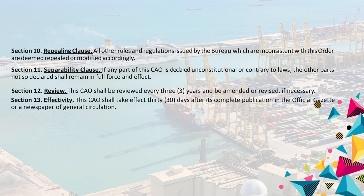Section 10. Repealing Clause. All other rules and regulations issued by the Bureau which are inconsistent with this order are deemed repealed or modified accordingly. Section 11. Separability Clause. If any part of this CAO is declared unconstitutional or contrary to laws, the other parts not so declared shall remain in full force and effect. Section 12. Review. This CAO shall be reviewed every three years and be amended or revised, if necessary.